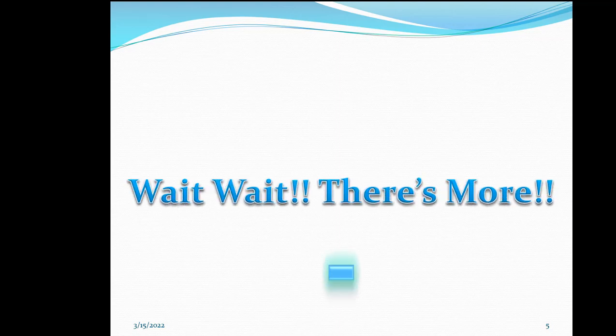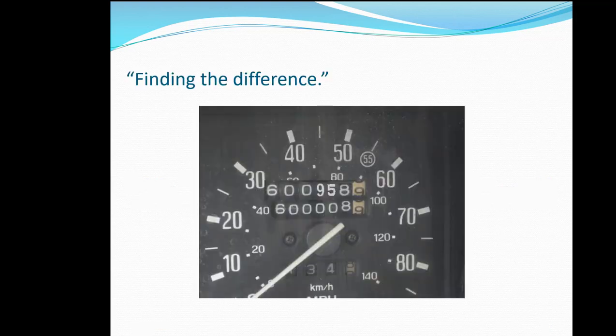Is that all there is? Wait, wait, there's more! We use subtraction if we are comparing two amounts, otherwise known as finding the difference. The later mileage shows 950 more miles on Clyde's car. Subtracting tells us the part of the miles he drove between the first and second picture. The bigger number is the whole, smaller number is a part, the difference is the other part.